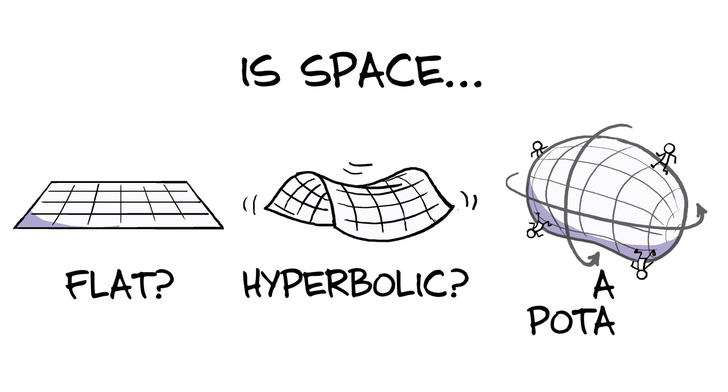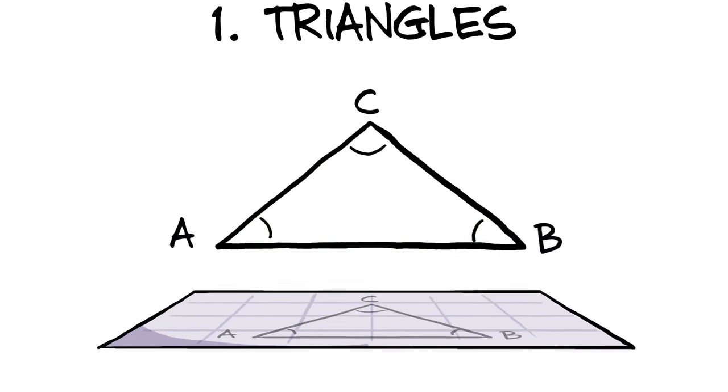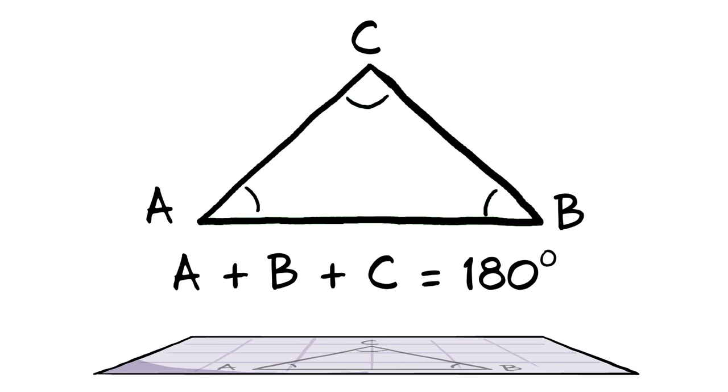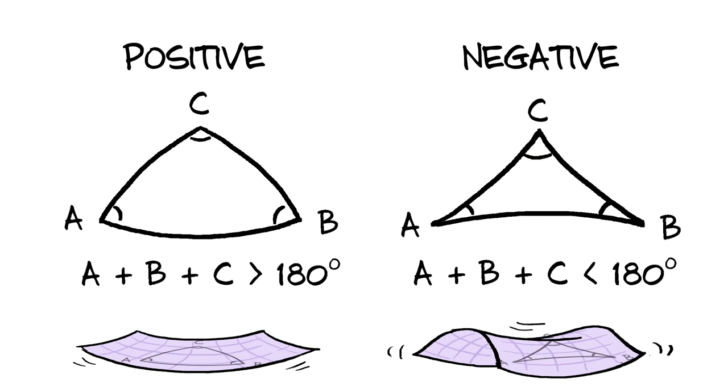So which is it? There are basically two ways to measure the large-scale curvature of the universe. One is to measure the angles inside of triangles. If space is flat, the angles will add up to 180 degrees. But if space is curved, those angles will add up to more or less than 180 degrees, depending on the type of curvature.